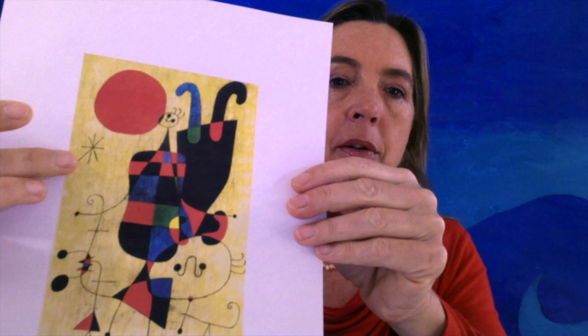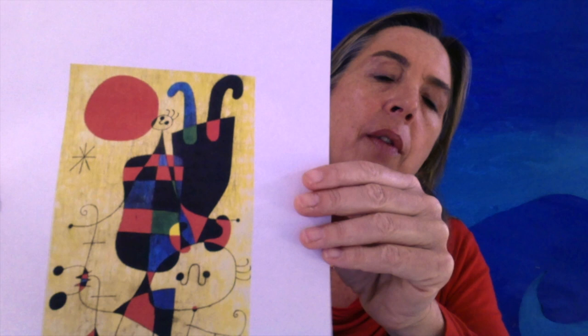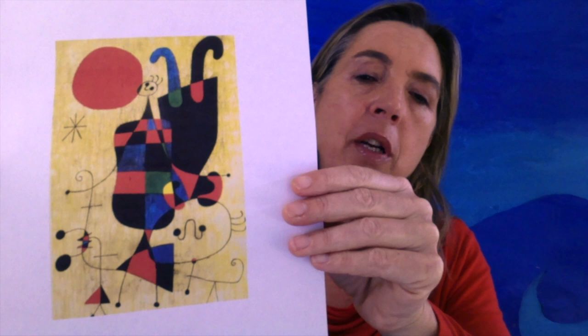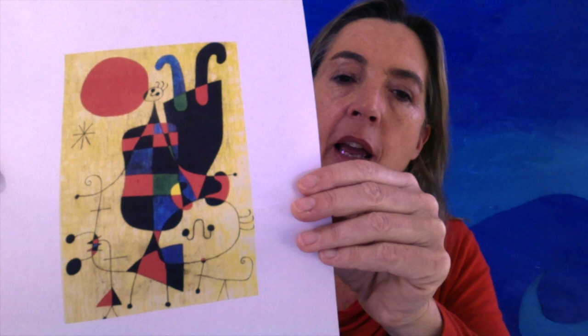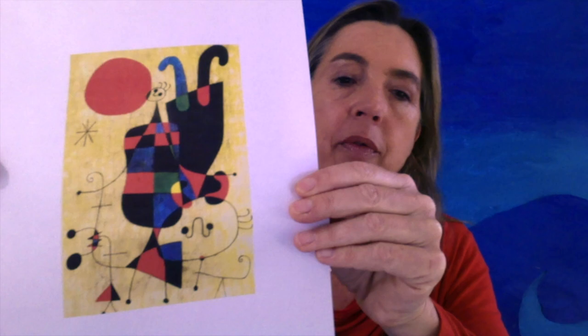And these little shapes here that are kind of like, I'm not sure if they're stars or if they could be snowflakes, they give a lot of movement to the paintings. If you look at the colors, he always uses the primary colors, which are red, yellow, and blue. Now you also have black and just a little bit of green, a pop of green.